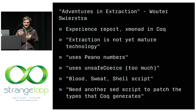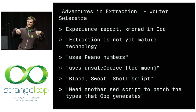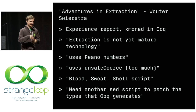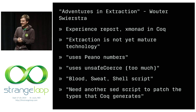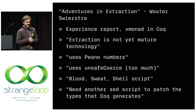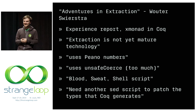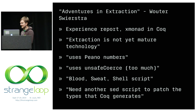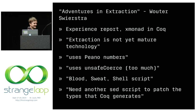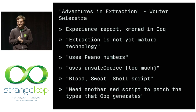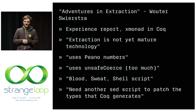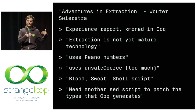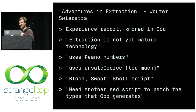He uses Peano numbers — an inductive data type. He was extracting from Coq to Haskell, and Peano numbers are really inefficient. If you have to represent 1,024, you have to have 1,024 objects in memory, which is not good. He used a lot of unsafe coerce, telling Haskell to just trust the extraction process. And there's a lot of blood, sweat, and shell script. We don't want to write formally verified code and have some shell script involved — he had a shell script to patch the types, to replace things in the formally verified output. It's not nice.